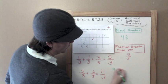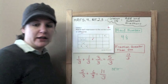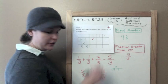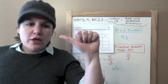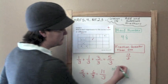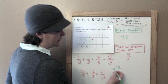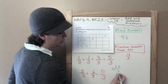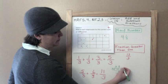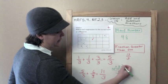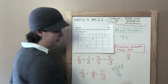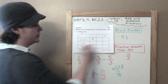Eleven divided by three. Three goes into one — it can't. Three can go into eleven: three, six, nine, twelve — twelve is too many, so three times three is nine. Subtract, we get two. So started from the bottom, now we're on top. The three is our denominator, so three and two-thirds.